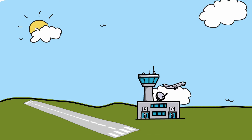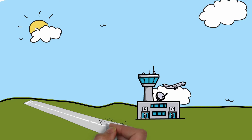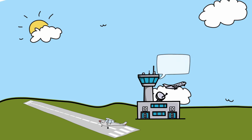To give you an example of how air traffic controllers use height, altitude and flight level, we'll start with a scenario where you are on the ground at an aerodrome. You will more than likely depart the aerodrome on QFE, and potentially with some instructions from air traffic control. For example: on departure, climb to height 2000ft, QFE 1006. The word height is used because it is expected that you are departing on QFE.